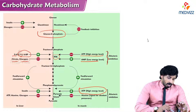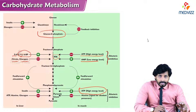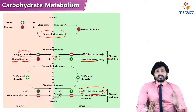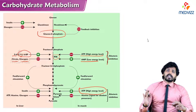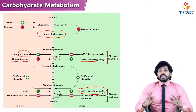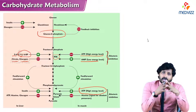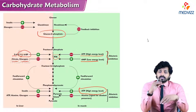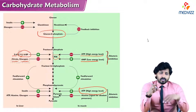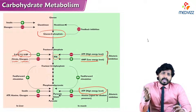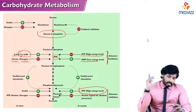Two colors are shown — gray and green — representing liver and skeletal muscle respectively. In the liver, glycolysis must stop at a certain point. In skeletal muscles, due to continuous contraction, there is a continuous requirement for energy, so glycolysis need not stop and must continue. This is why inhibitors and promoters vary between liver cells and skeletal muscles.